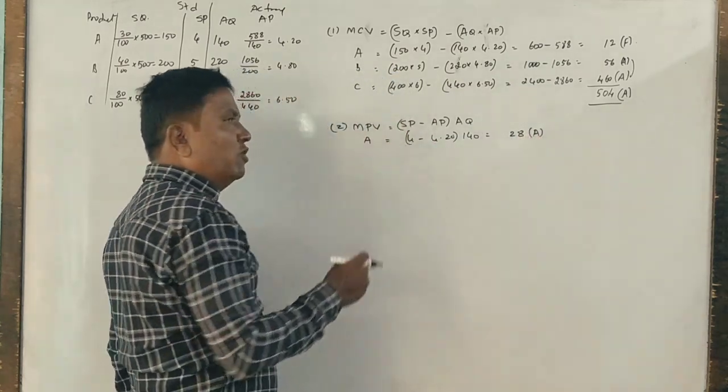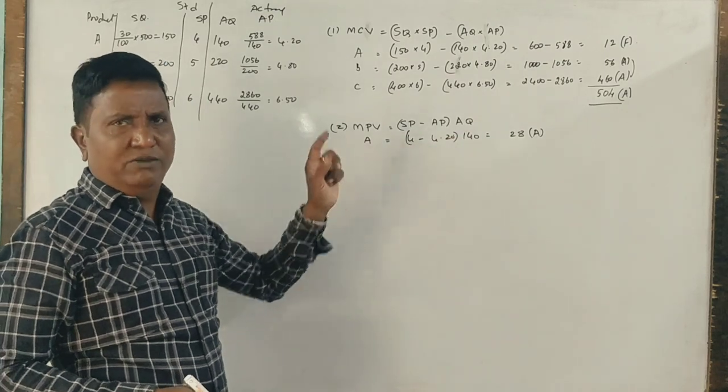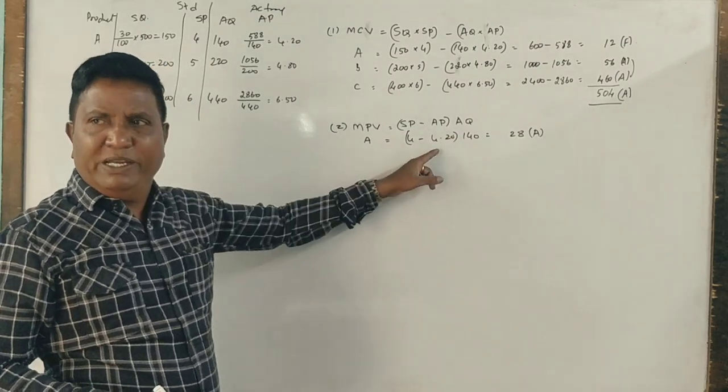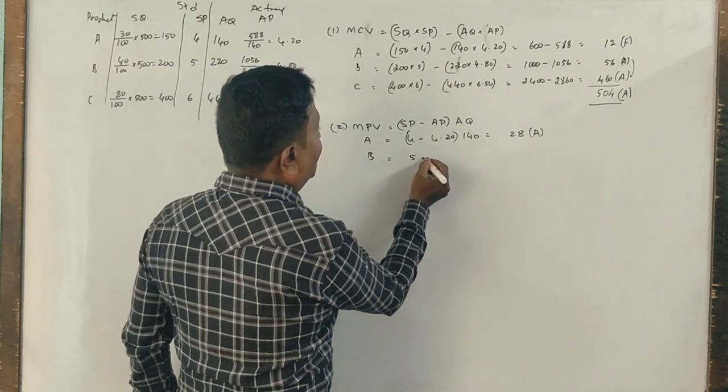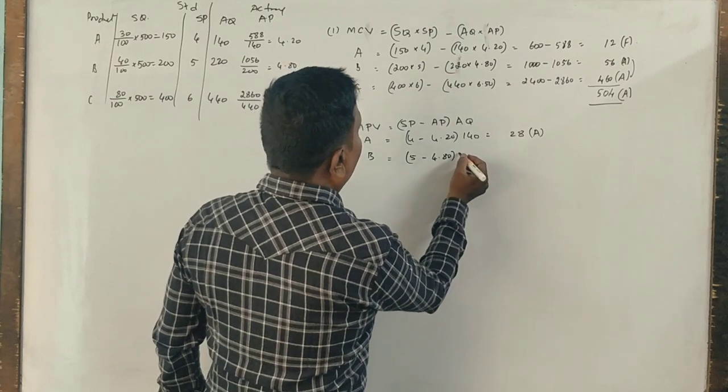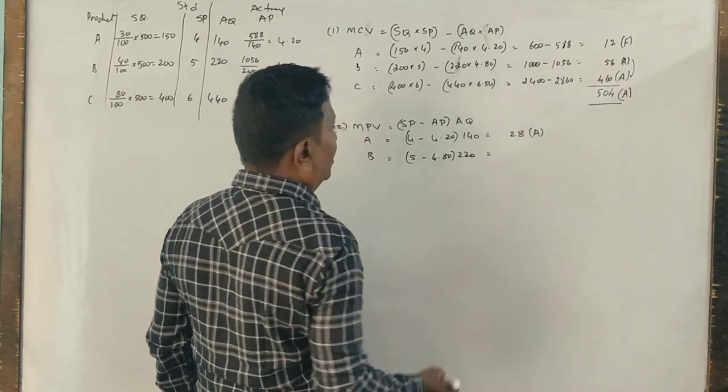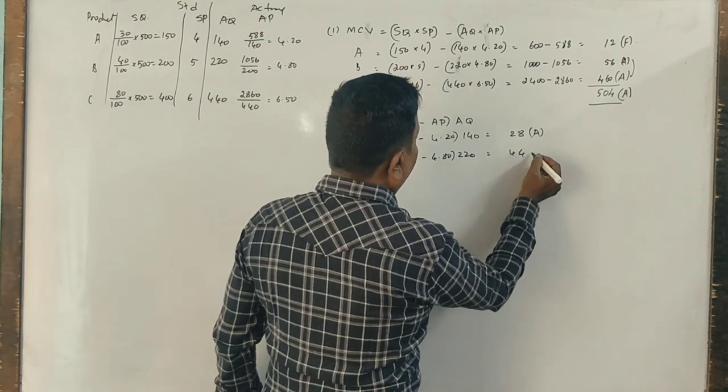Actual is 4.2, so that's adverse. If actual is more, it means adverse. B: 5 minus 4.8 into 220 is 44 favorable.